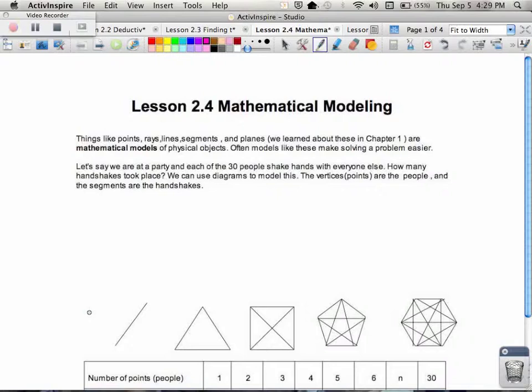Let's say we're going to a party and there are 30 people at this party, and they're all going to shake hands with everybody else. How many handshakes happened at the party? Well, believe it or not, you can actually use a diagram to model that. The vertices, or the points, are going to be the people, and the segments that join them are going to be the handshakes.